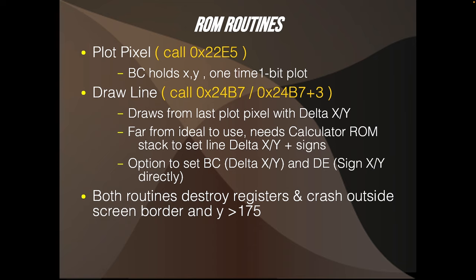Let's talk about the ROM routines available in the ZX Spectrum. We have a plot pixel routine where B and C registers hold the X and Y values, and you can plot a one-bit pixel at a time — pixel or no pixel. There is also a draw line routine that draws a line from the last plotted pixel with delta X and Y. It needs calculator ROM to set up the line delta X, Y and the signs. There is an option to set BC (delta X, Y) and DE (sine X, Y) directly, but both routines destroy the registers and crash outside the screen border as well as when the Y value is bigger than 175.